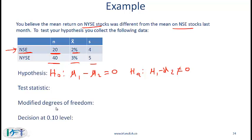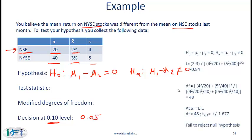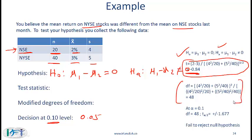The modified degrees of freedom is also computed using the formula shown. Using a 0.1 level of significance for a two-tail test, you look for 0.05 in each tail. When you do the calculations, the test statistic should be minus 0.84. The degrees of freedom is 48. At alpha equal to 0.1 and degrees of freedom equal to 48, T alpha over 2 gives plus or minus 1.67. Notice that our test statistic falls inside that range, which means we fail to reject the null hypothesis.